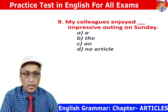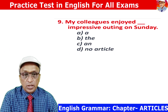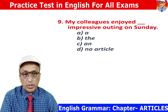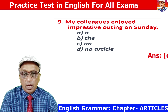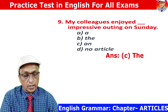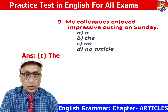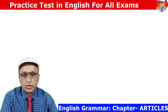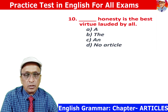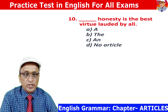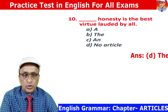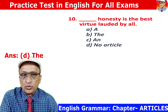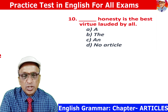Question 9: My colleagues enjoyed an impressive outing on Sunday. 'Impressive' gives a vowel sound, so the article AN is to be used. Answer is C. Question 10: Honesty is the noblest virtue praised by all. 'Virtue' is an abstract noun, so no article is to be used. Answer is D.